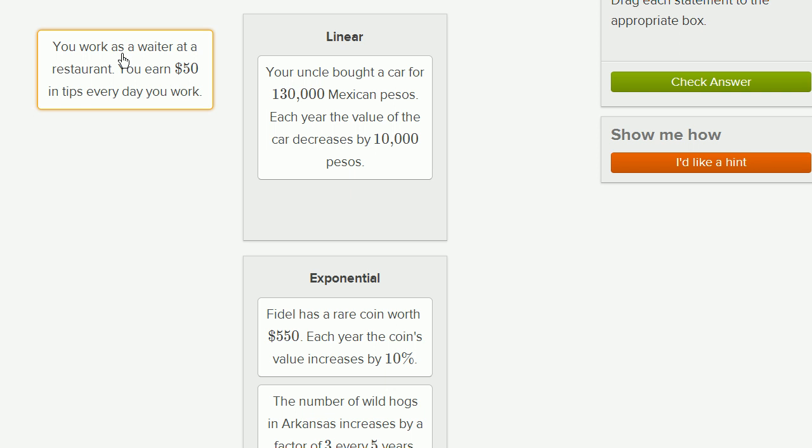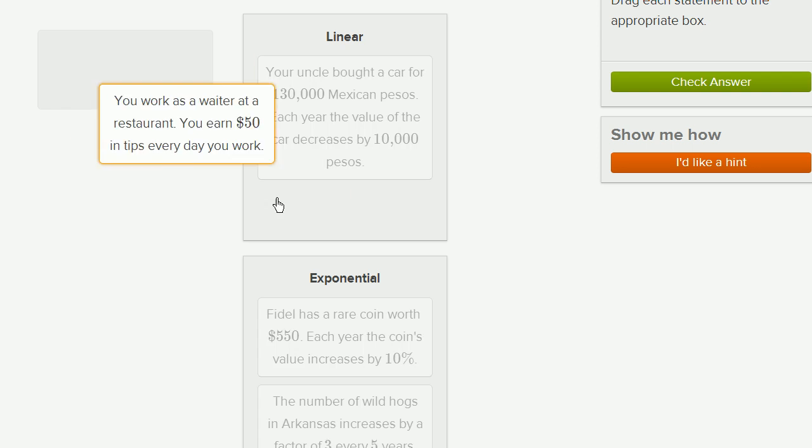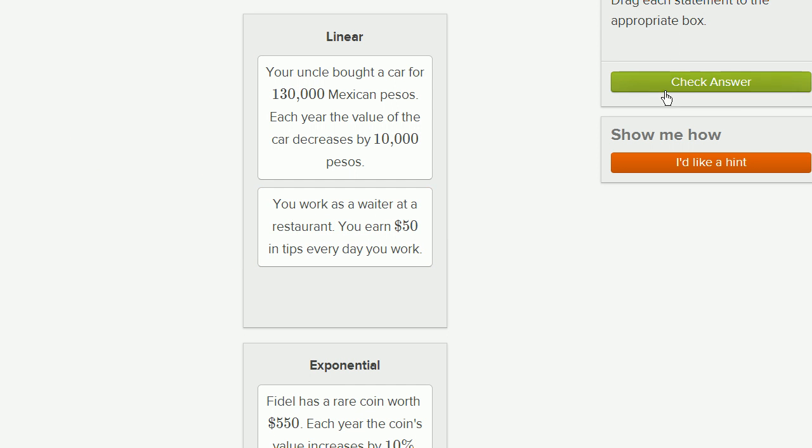And then finally, you work as a waiter at a restaurant. You earn $50 in tips every day you work. Well, this should jump out as very linear. Every day you work, another $50. Work one day, $50. Two days, $100. So forth and so on. They're not saying you earn 50 times as much as the day before or 50% more. You're increasing by a fixed quantity. So this is going to be a linear model.